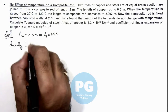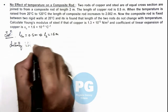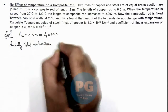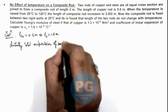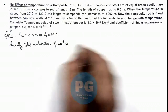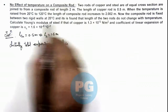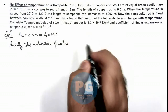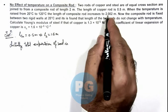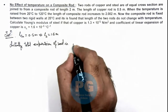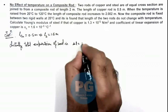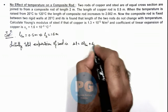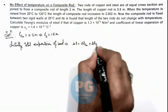The total expansion of the composite rod when temperature is raised from 20 to 120 degrees is 0.002 meters. So we can write: ΔL = ΔL_copper + ΔL_steel.